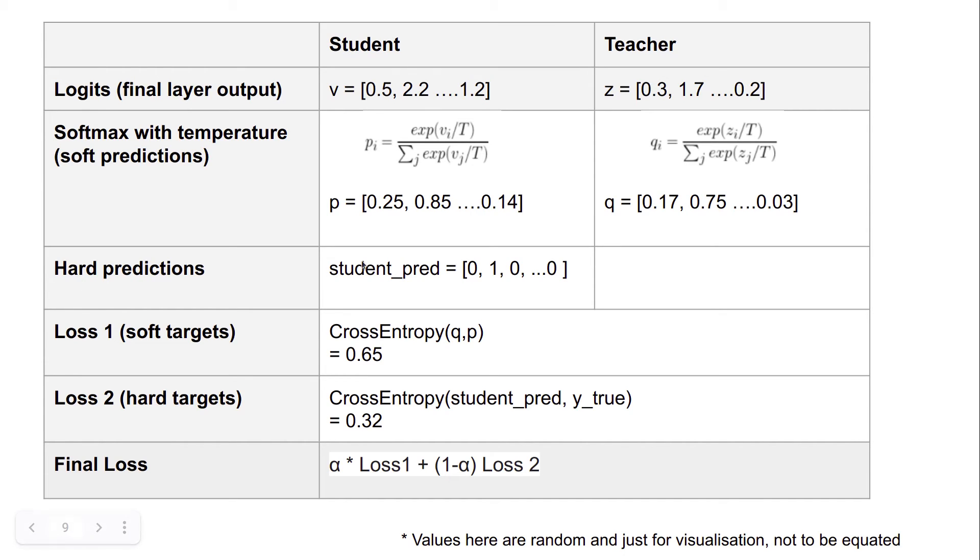So hard prediction is calculated only for student, which is basically you take the P vector, get the highest value, set it to 1, and set rest of the values to 0. So it's like looking at the class probabilities but setting the highest class to 1 and the rest of the classes set to 0. So we have the hard predictions and then we calculate two types of loss. So let's look at what those losses are.